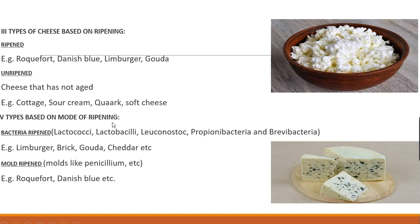Classification based on the mode of ripening distinguishes bacterial ripened from mold (fungal) ripened cheese. Bacteria involved in ripening include Lactococci, Lactobacilli, Leuconostoc, Propionibacteria, and Brevibacteria; examples are Limburger, Brick, Gouda, and Cheddar. Mold-ripened cheese is exemplified by Roquefort, where the ripening organism is a Penicillium species.